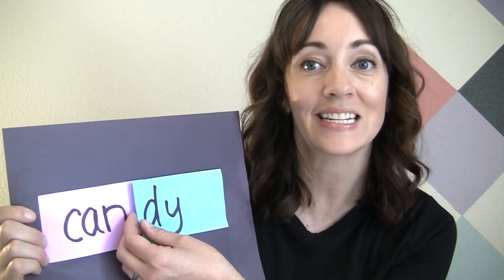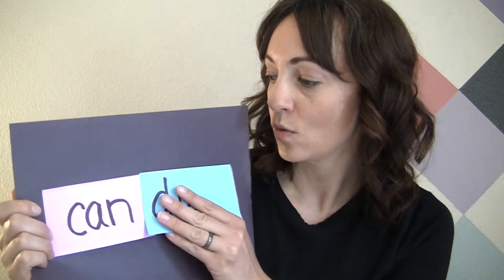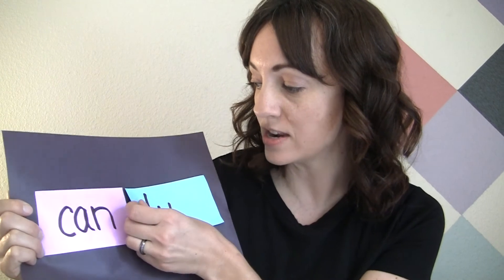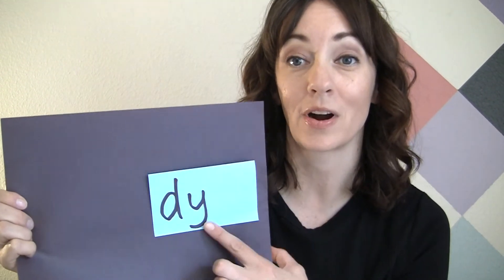Sometimes we'll be taking off the second syllable. In candy, we would take away the 'dy' and end up with the word 'can.' Sometimes we'll be taking off the first syllable. So in candy, if we took off the initial syllable, we'd be left with the word or word part 'dy.'